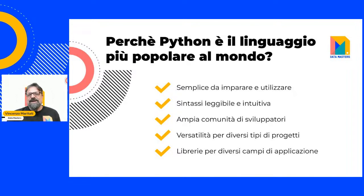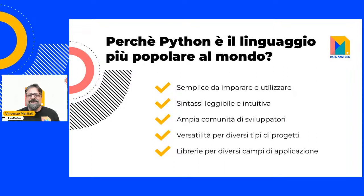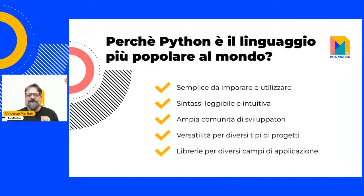Tra le principali caratteristiche di Python c'è la leggibilità del codice: grazie alla sua sintassi intuitiva spesso è possibile leggere il codice quasi come fosse una frase in inglese. Questo facilita la collaborazione tra sviluppatori, permettendo a chiunque di capire il codice sorgente senza dover decifrare complesse costruzioni sintattiche. Un altro punto di forza è la sua community globale, vasta ed estremamente attiva, con un ecosistema ricco di supporto, documentazione, tutorial e forum.